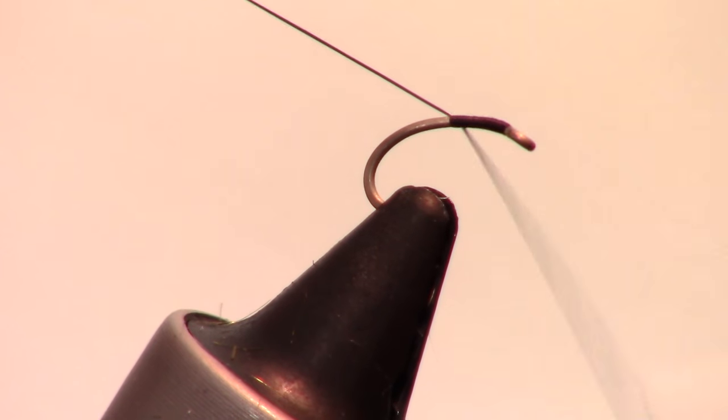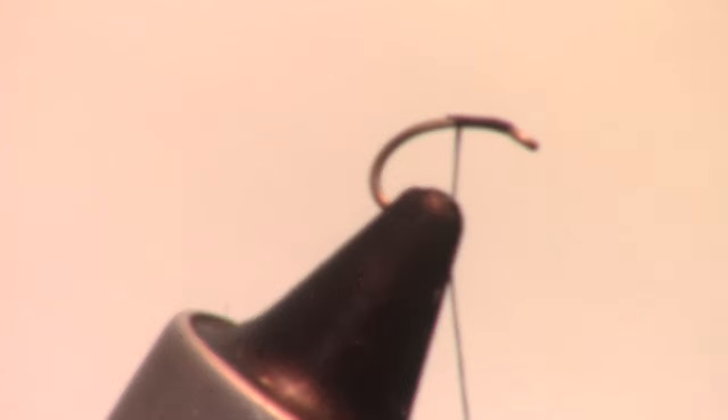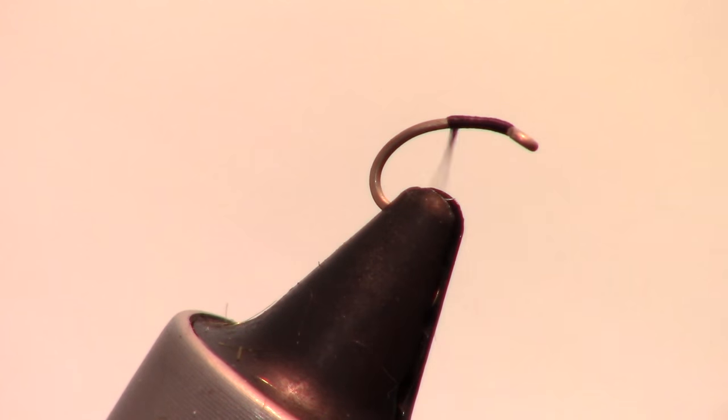Start your thread just behind the eye of the hook and secure it with a few wraps rearward. Then proceed to wrap your thread smoothly to about halfway down the hook shank.